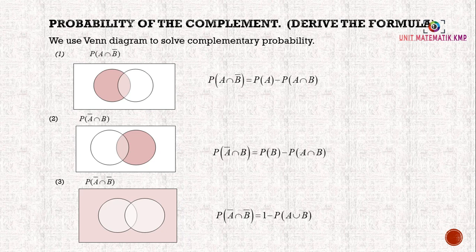Probability of the complement. We use Venn diagrams to solve complementary probability. For the first one, we have probability of A ∩ B', meaning A intersect everything except B. This is A and this is event B. So P(A ∩ B') is the shaded area. To find the probability, we take the probability of A minus the probability of intersection A and B.